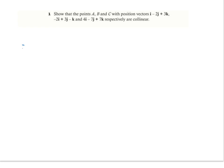Let's begin by writing these as some sort of position vector in terms of O. If I start out with some point here, I'll call that O, and I want to go to some point over here, I'll call that B. To identify the vector from A to B, I have to go from A to O, and then O to B.